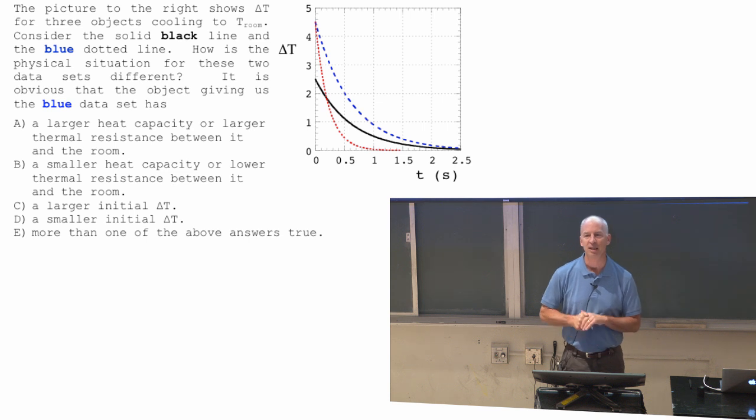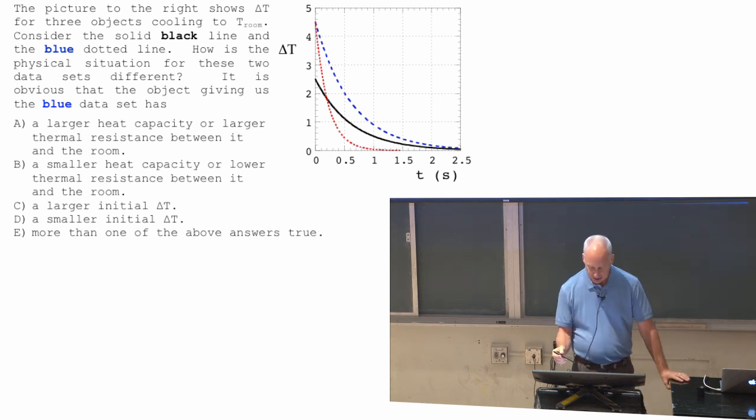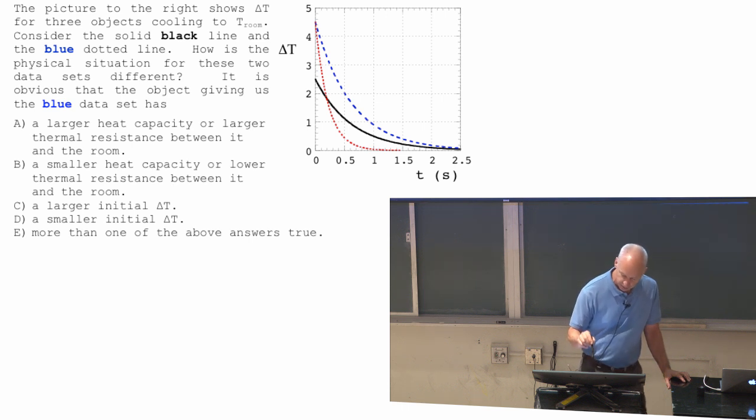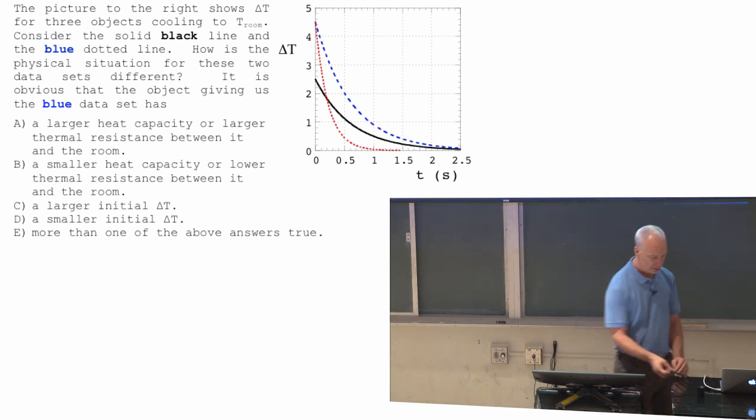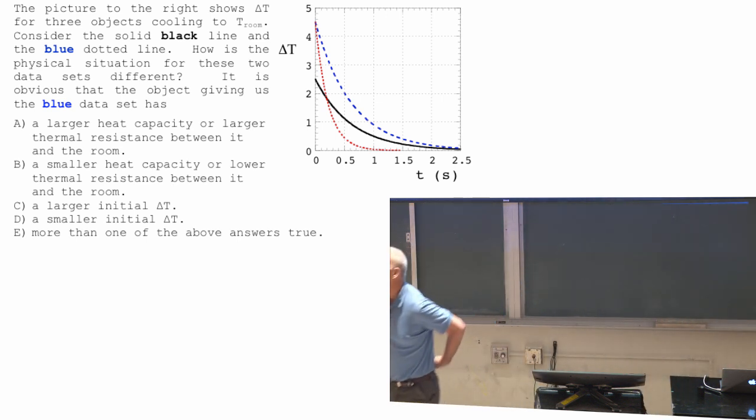Okay, so the blue data set either has a larger heat capacity or larger thermal resistance, smaller heat capacity or smaller thermal resistance, larger initial delta T, smaller initial delta T, or more than one of the above answers is true. T equals zero—initial delta T would be delta T at T equals zero. Sorry about that.